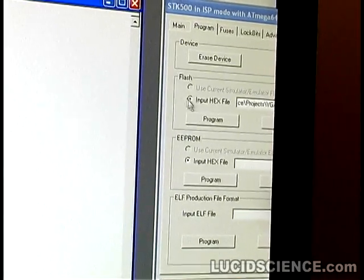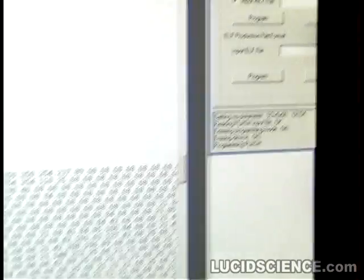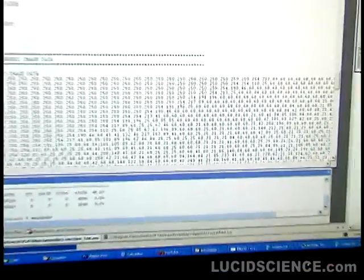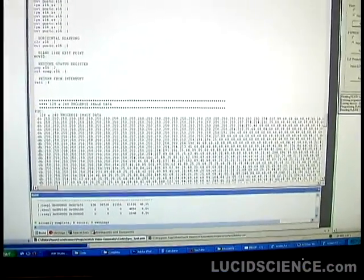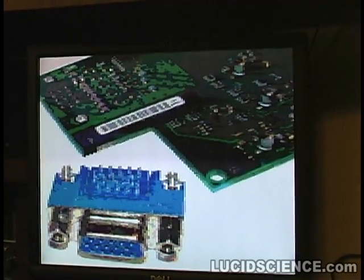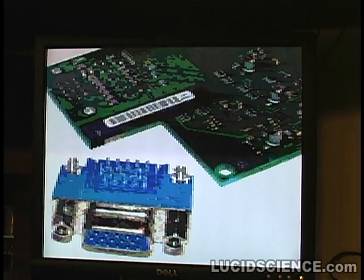The active line generator will fetch the data one pixel at a time and display it to the screen. Because the load program memory and out port commands take four cycles, the maximum resolution that can be achieved with this method is 128 pixels by 240 pixels.